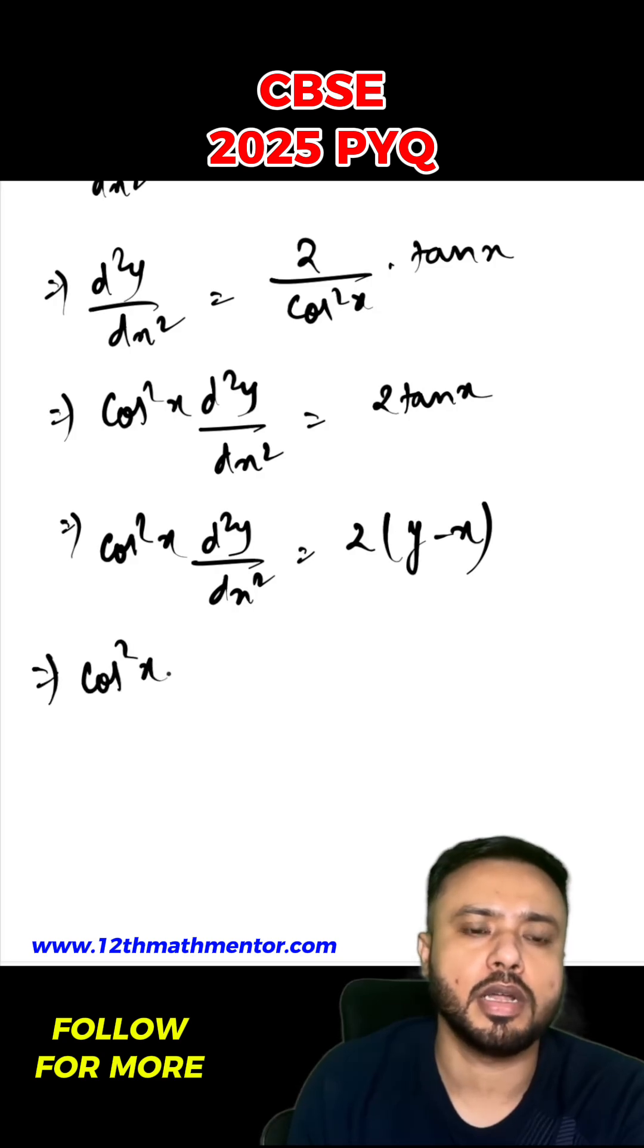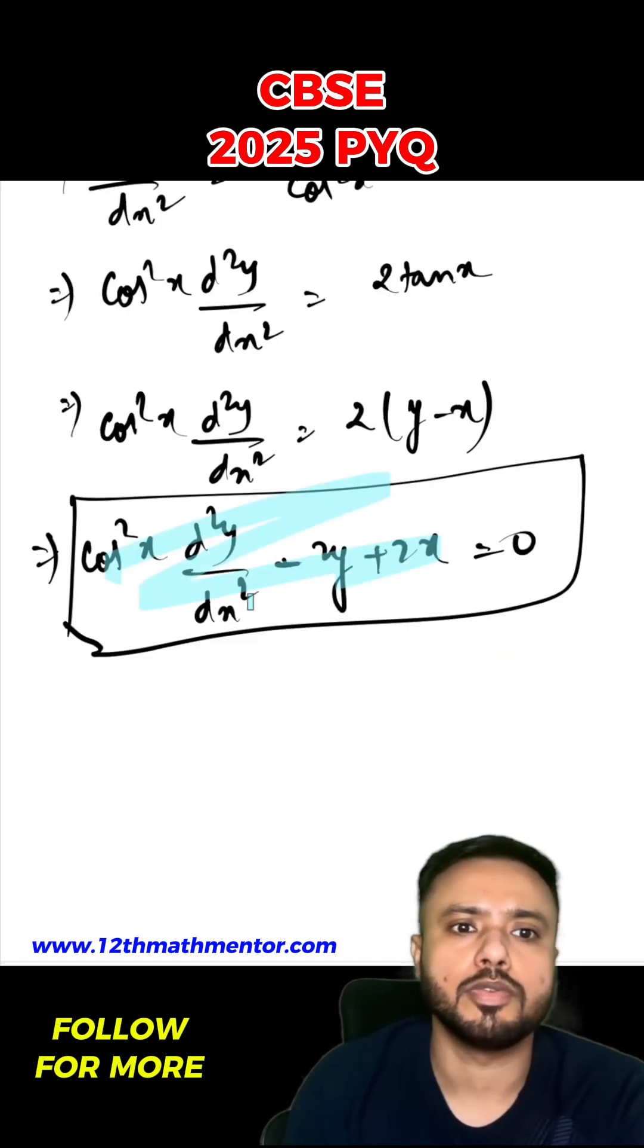Hence I will simplify it and get our answer. So cos²x d²y/dx² minus 2y plus 2x will be equal to 0. This is what we had to prove in the question.